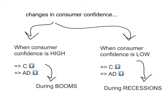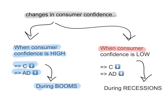The first factor that causes changes in consumption spending, which will then shift the aggregate demand curve, is changes in consumer confidence. When consumer confidence is high — this happens usually during booms and periods where the economy is doing well — consumption spending will increase and therefore the aggregate demand curve will shift to the right. However, when consumer confidence is low, which is often the case during recessions, consumption spending will fall and aggregate demand will decrease, shifting to the left.